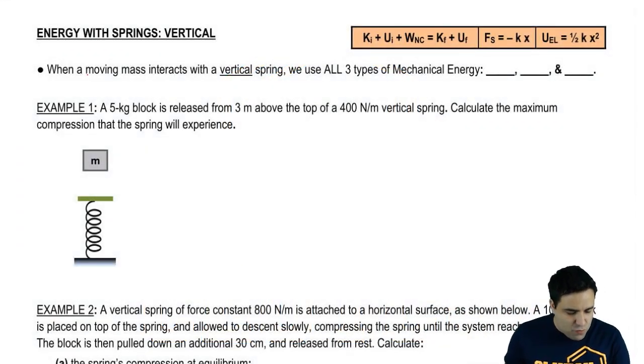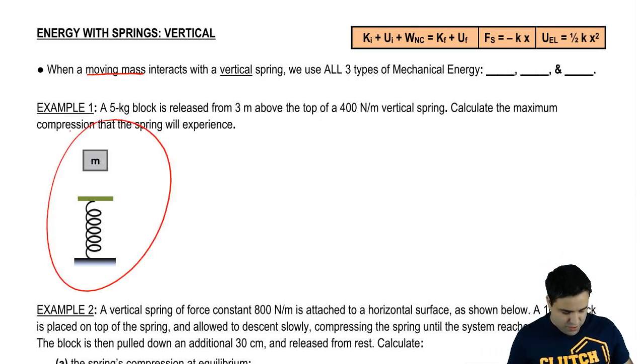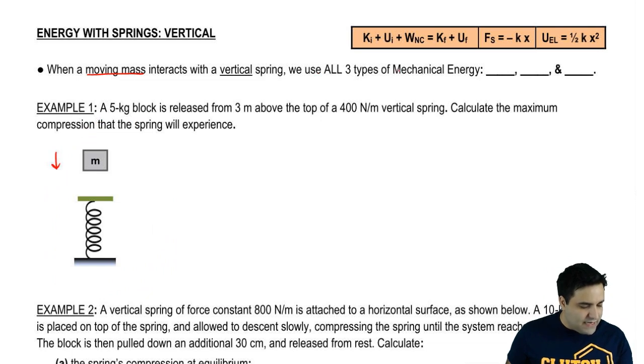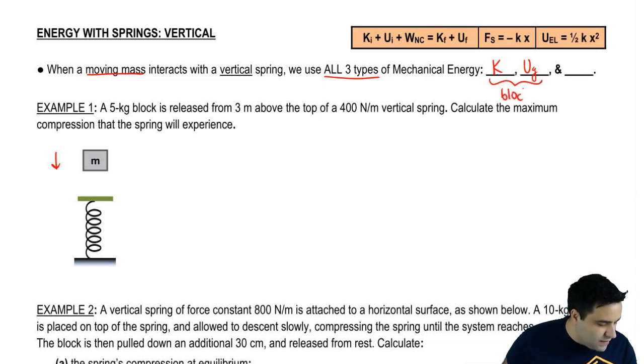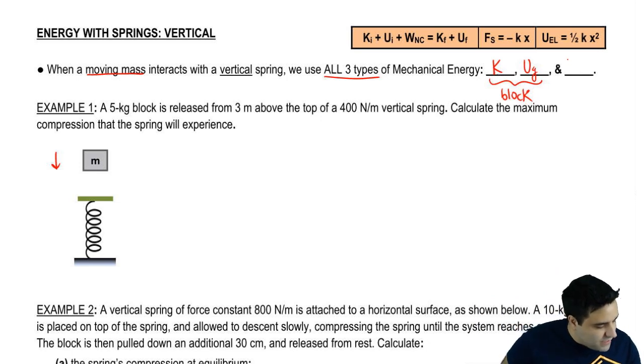When you have a moving mass that is interacting with a vertical spring, meaning it's pushing against a vertical spring or being pushed by the spring, we have all three types of mechanical energies. We have kinetic energy, we have gravitational potential energy of the block or the mass because the mass has velocity, it's moving up and down, and the mass has potential energy. The potential energy is changing because the heights are changing. And then we're also going to have the elastic potential energy of the spring.